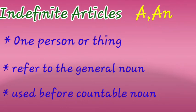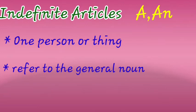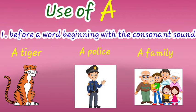Indefinite articles — 'a' or 'an' — are used before one person or thing. Second, they refer to general or common things. Third, they are used before countable nouns, meaning things we can count. So we use indefinite articles 'a' or 'an' before countable nouns.